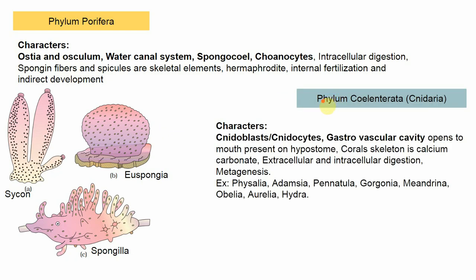The next phylum is Coelenterata, also called Cnidaria. The name is derived from a unique type of cells called cnidoblasts or cnidocytes, which help in offense, defense, and anchorage. They are also called stinging cells because they have a harpoon-like structure ejected on contact with any organism. A cavity called the gastrovascular cavity is present, somewhat equivalent to a stomach, opening into the mouth present on the hypostome.